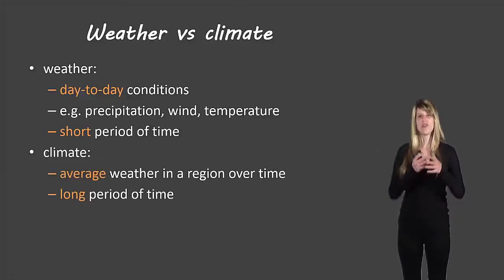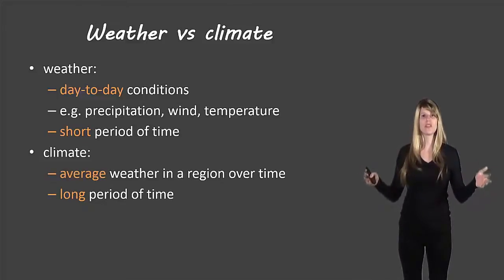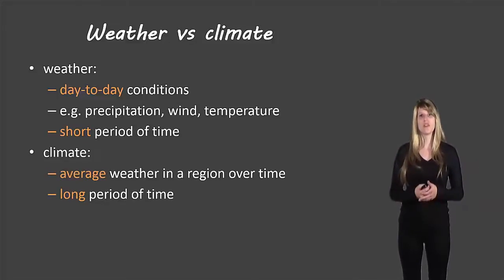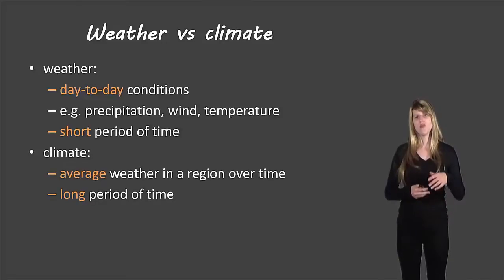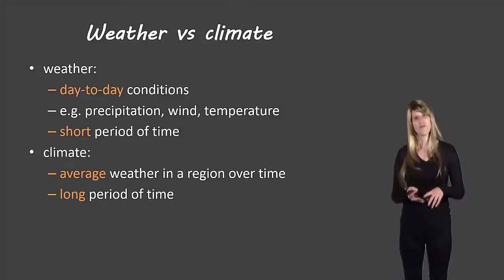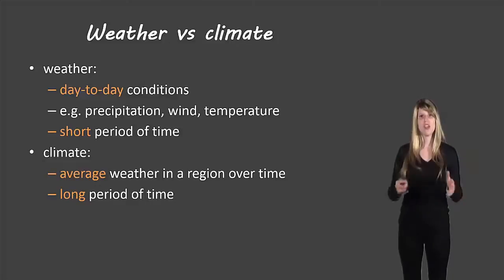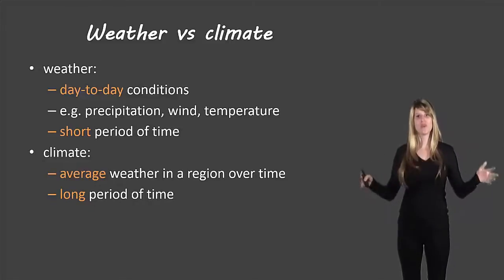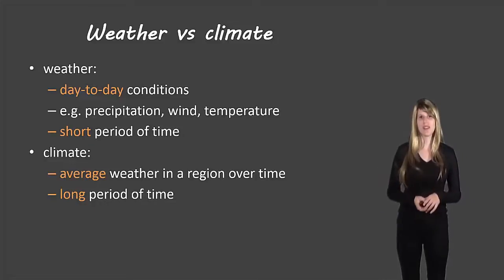Climate on the other hand is over a long period of time. For example over several years or several decades. When we talk about the climate of a certain region we're still looking at precipitation, temperature, wind and all of those factors but average temperature or average precipitation over a very long period of time gives us the climate.